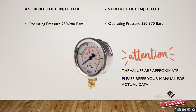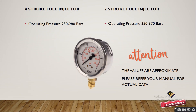The operating pressure for the 4-stroke fuel injector lies between 250 to 280 bars, whereas the operating pressure for the 2-stroke engine fuel injector lies between 350 to 370 bars. Please note that the values given here are approximate; please refer to your respective manual for actual data.